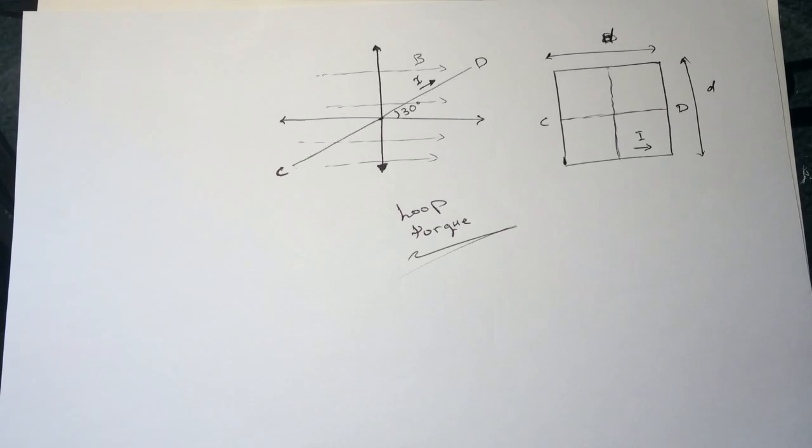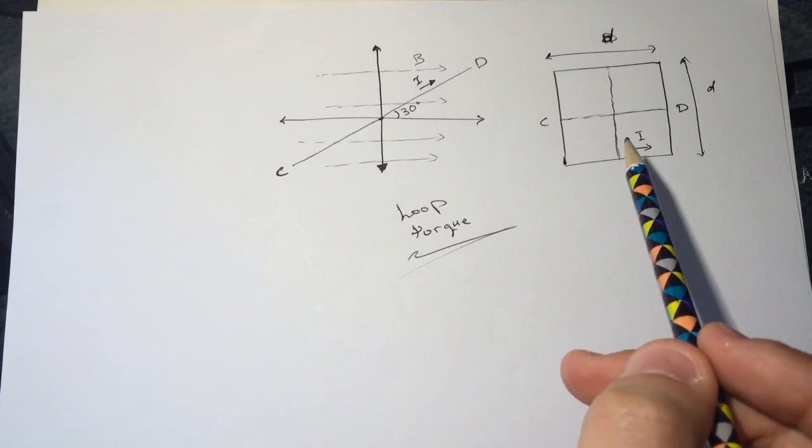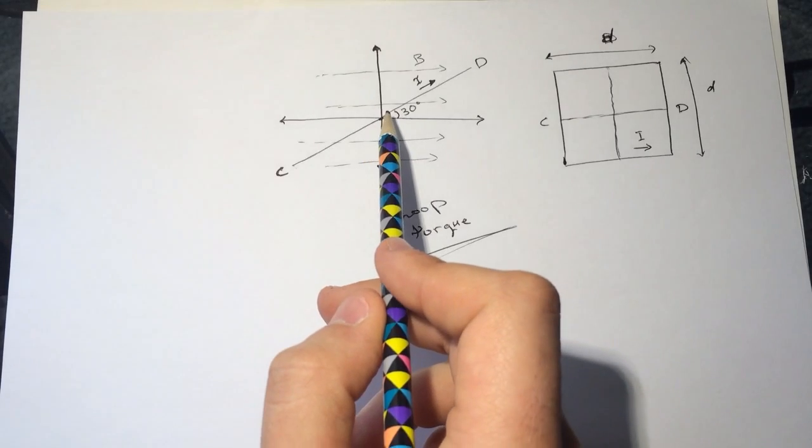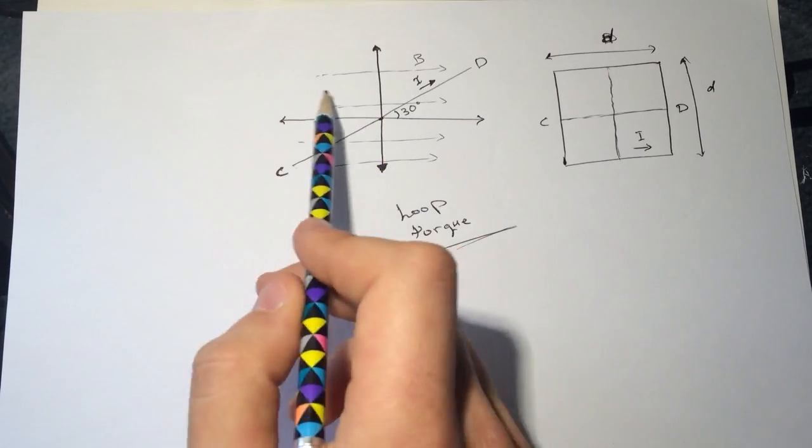Hi guys, this is Smart Physics tutorial for loop torque. You can read the question description below. We have a square loop at an angle in a magnetic field, and the magnetic field is parallel to the x-axis.